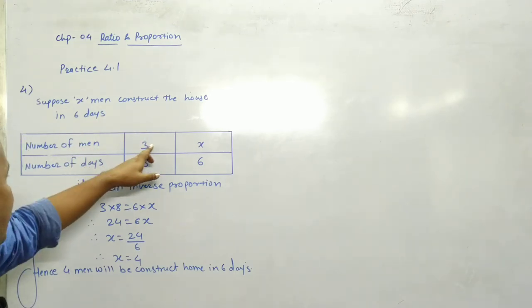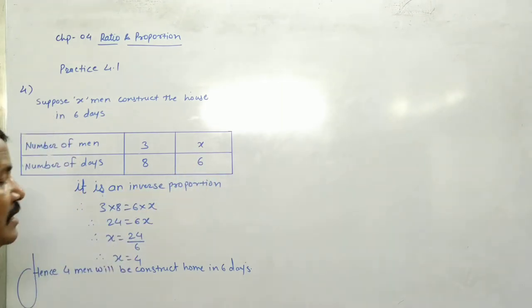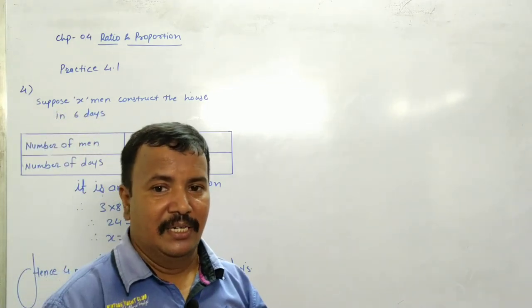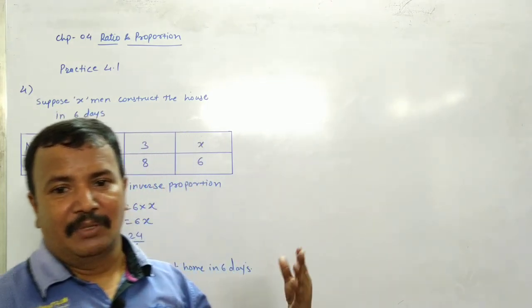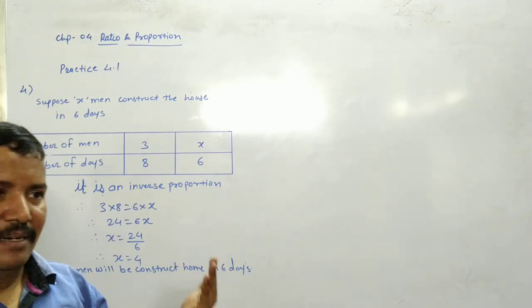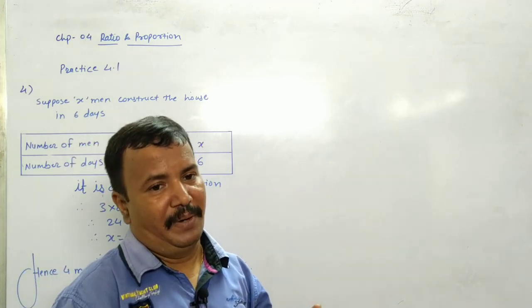Suppose x men construct the house in 6 days. Number of men 3, number of days 8. Number of men x, number of days 6. It is an inverse proportion. More people, work gets done faster. Less people, work gets delayed. One increases, other decreases. This is inverse proportion.